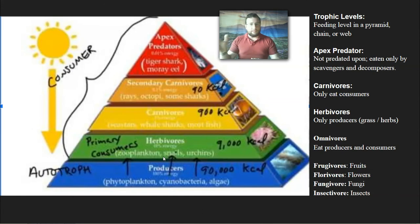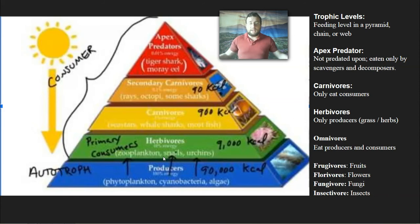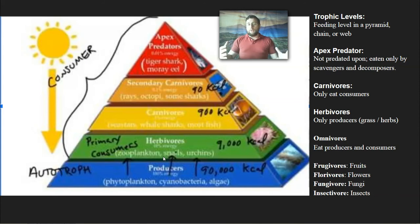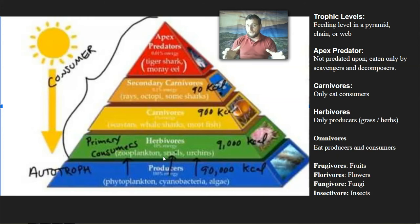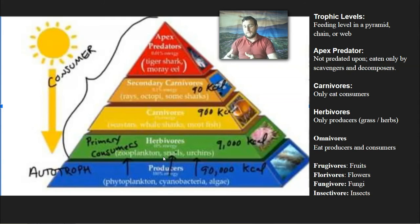Producers are the ones making the food and capturing the sunlight. They are the ones bringing the energy into the ecosystem and building food using that energy. Everybody else is considered a consumer because they eat these producers. Every layer that you go up, there's less and less energy available. The producers are the ones with the most energy because they get it directly from the source. The consumers have less energy, and then less after that, and less after that.